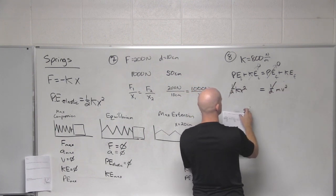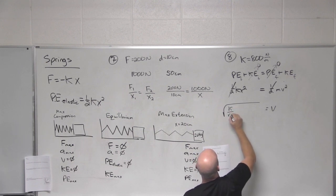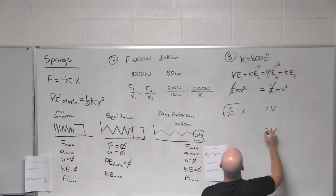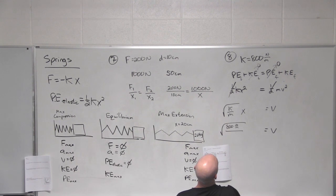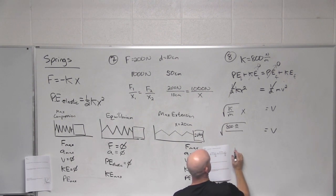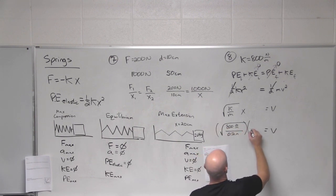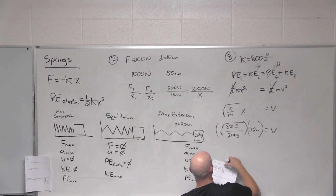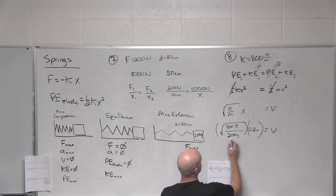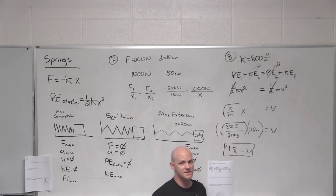The halves cancel, and velocity equals the square root of k over m, times x — and the square root of x squared is just x. I should use the displacement of 0.2 meters, not 20 centimeters. So: 800 divided by 2 is 400, square root of 400 is 20, and 20 times 0.2 is 4. The velocity passing through the equilibrium position is 4 meters per second.